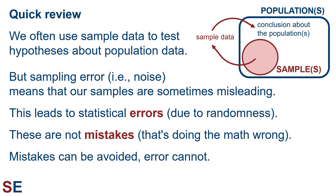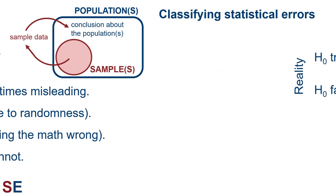Note that these errors are not mistakes. Mistakes would be doing the math wrong, like having a sample with a mean of 20 and messing up to calculate a mean of 19 for it. Mistakes can be avoided by doing the math right, but errors cannot be avoided because samples are never guaranteed to be a perfect representation of the populations they came from.